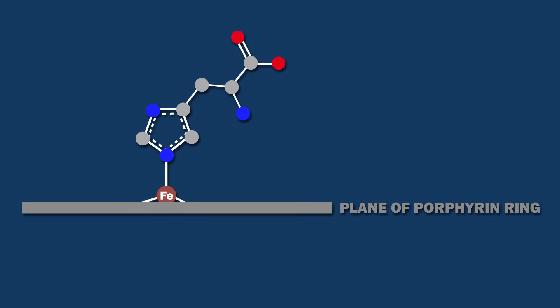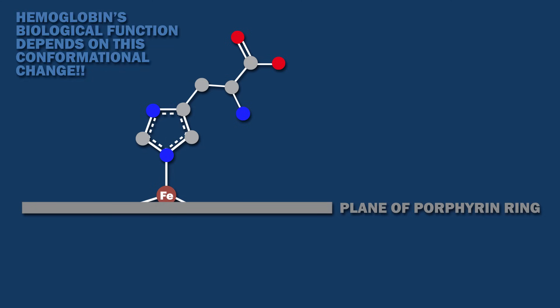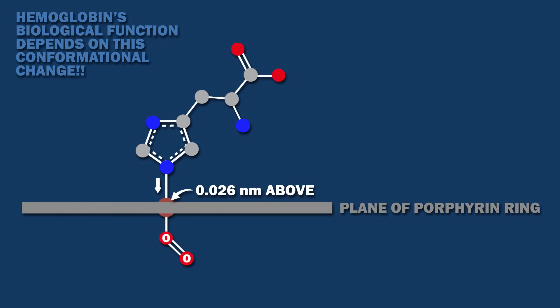A conformational change happens when oxygen binds to the iron in the heme group. This phenomenon is of no consequence in myoglobin, but hemoglobin's biological function depends on it. Before the binding of oxygen, steric constraints result in the ferrous iron lying 0.055 nm above the porphyrin plane. The binding of oxygen causes the iron to be drawn into the plane of the porphyrin ring, so that it is only 0.026 nm above it.